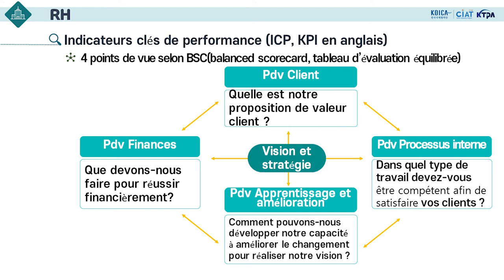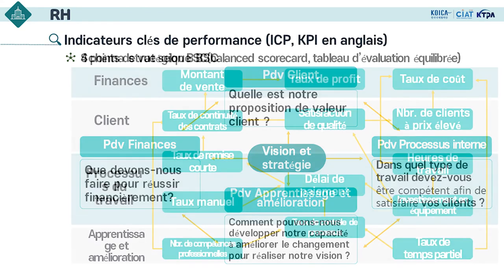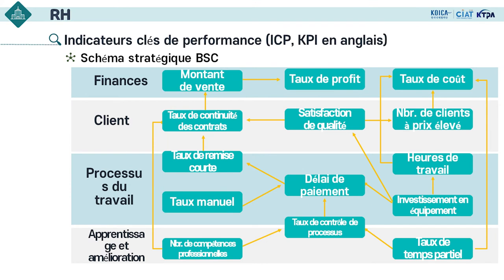L'équilibre des quatre points de vue est vraiment important : clients, finances, processus interne et apprentissage et amélioration. Pour une entreprise, le chiffre d'affaires et le taux de rentabilité sont importants. Pour le point de vue client, il y a le taux de continuation du contrat et la satisfaction sur la qualité du produit. Pour le processus du travail, les moyens d'amélioration incluent la réduction du délai. Et les méthodes de formation pour développer des professionnels compétents sont présentées pour l'apprentissage. C'est le schéma stratégique BSC.